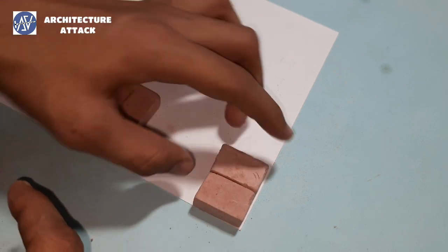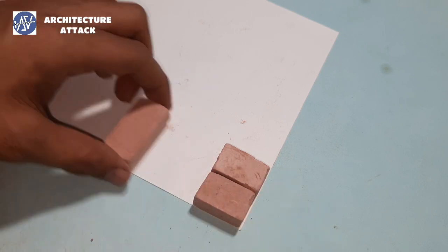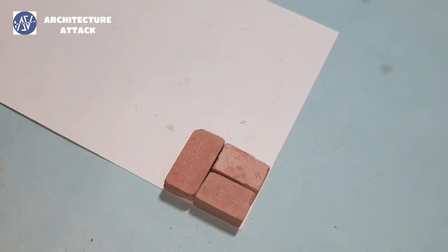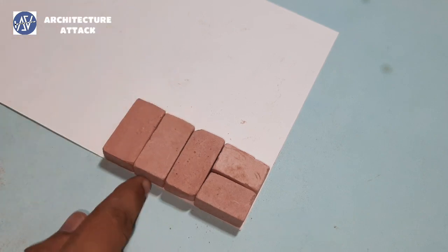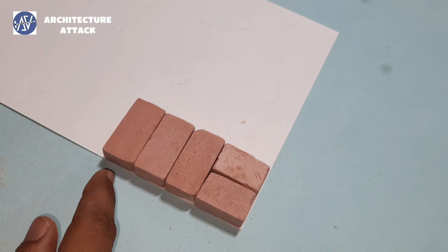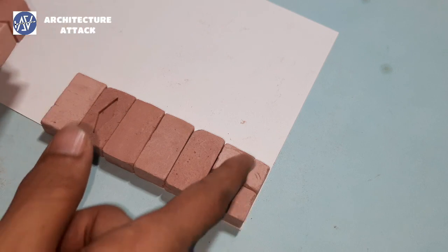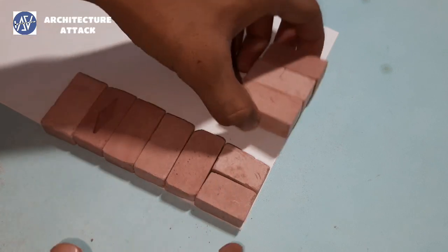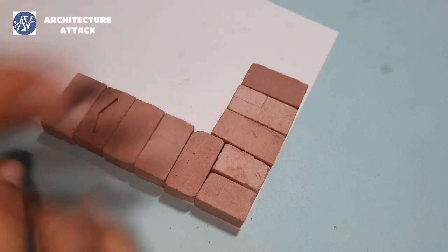We are placing two 3 by 4 bands like this and like this - headers. From elevation if we see, this is header, header, header. And from this side, these two are headers and these two are also headers. This is one course or one layer.